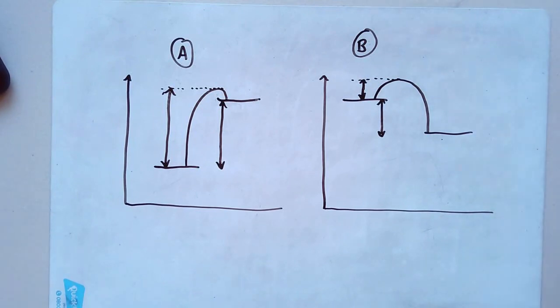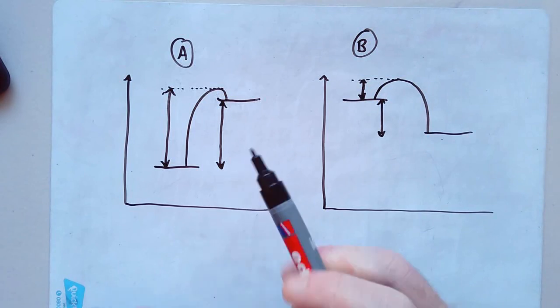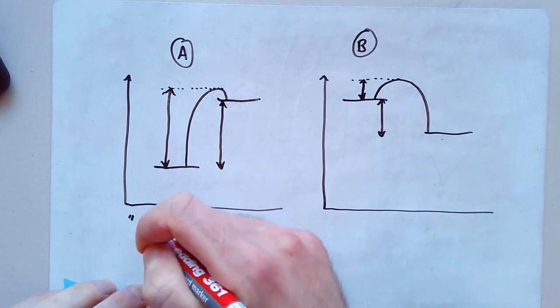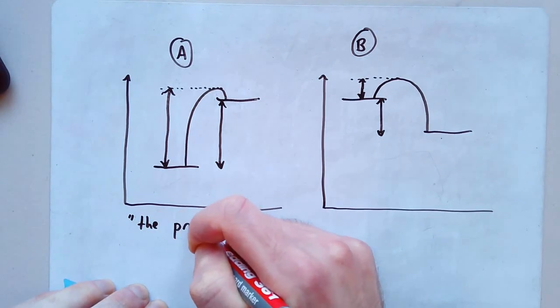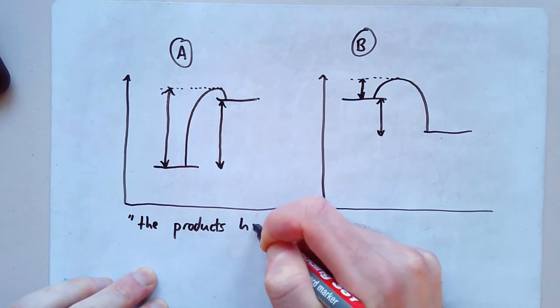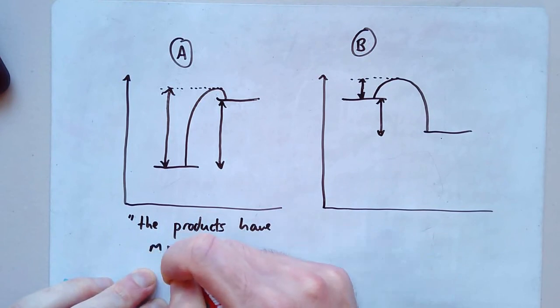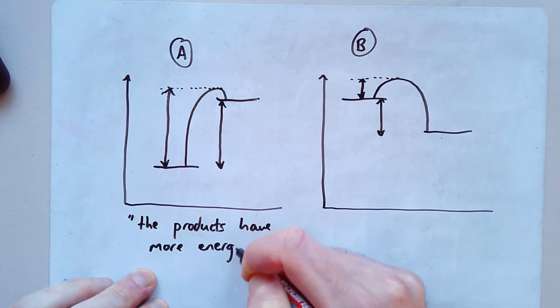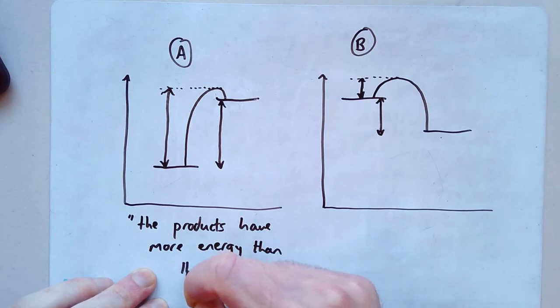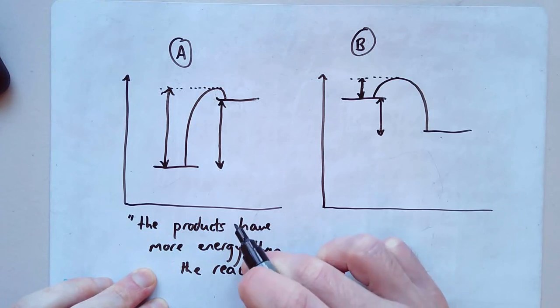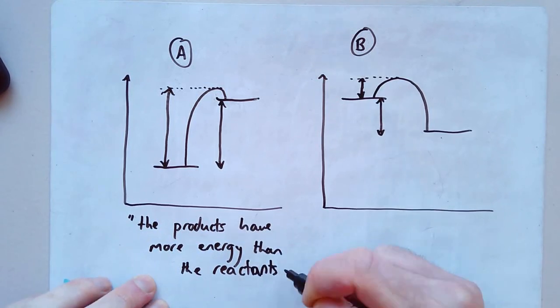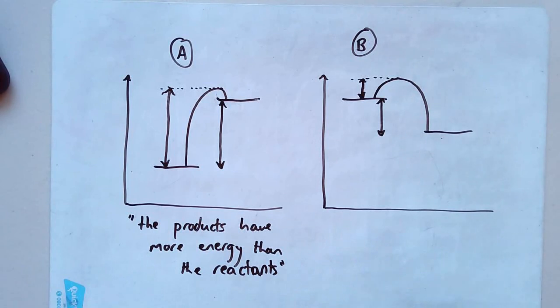How does the profile show this? This one is endothermic because, and you need to say phrases like, the products have more energy than the reactants. And again, it's very simple, it's a very simple model, and it is a bit more complicated in reality than that. But for us, that's enough. And then in this one, you're saying the products have less energy than the reactants, which is why it's exothermic. The energy has got to have gone somewhere.